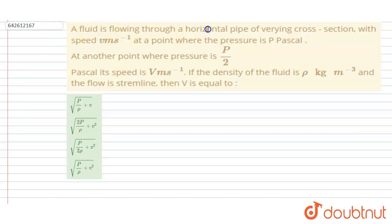through a horizontal pipe with varying cross-section with a speed v meter per second at a point where the pressure is p pascal. At another point where the pressure is p by 2, the velocity is V meter per second. If the density of the fluid is rho, then you have to find out the capital V value.